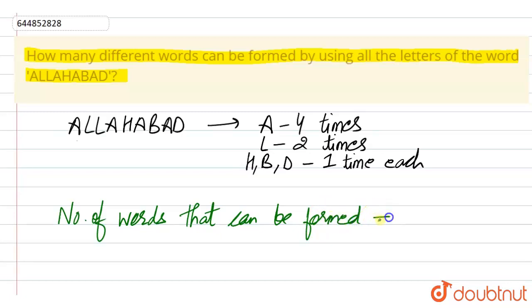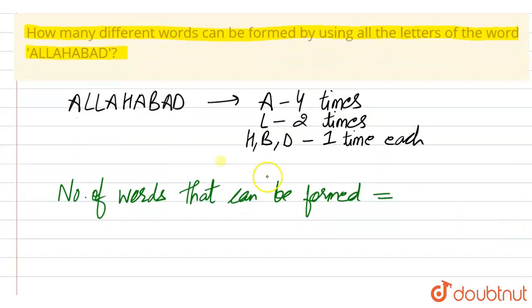By using all the letters of this word Allahabad, first of all we will calculate how many letters there are. This is one, two, three, four, five, six, seven, eight, nine. We have nine factorial words.